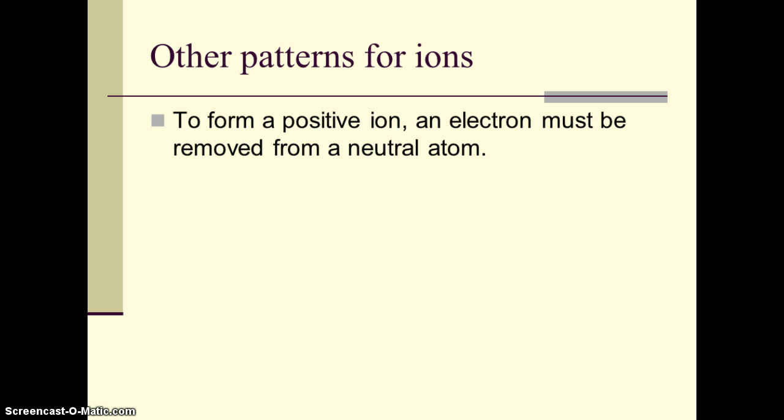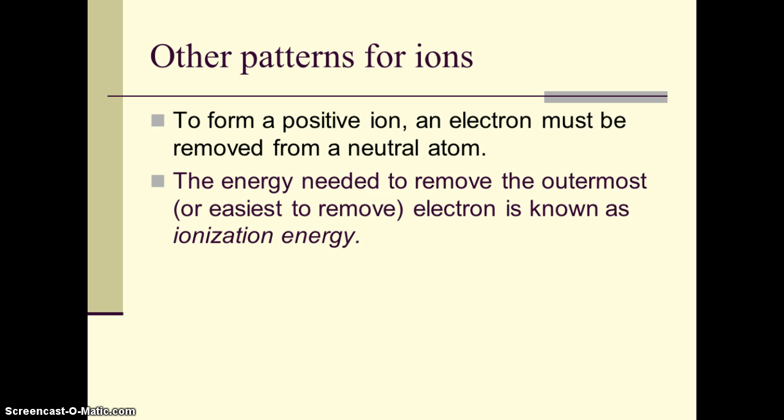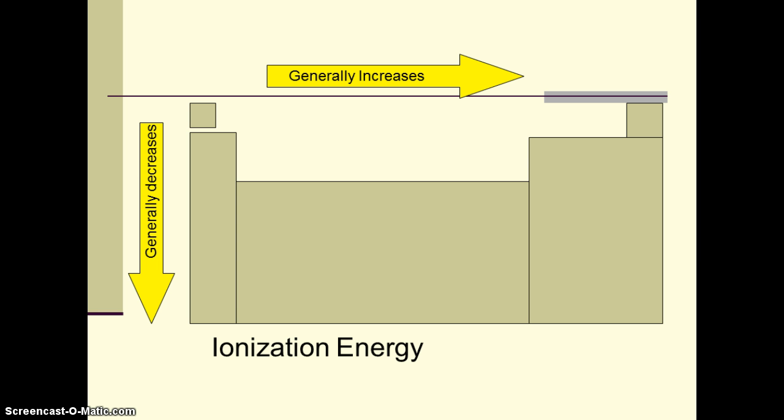There are some other patterns that we observe for ions as a result. One of those is ionization energy. And we looked at this when we were talking about electron energy levels and sub-levels. Ionization energy is the energy needed to remove the outermost or easiest to remove electron from an atom. And then once we remove that, we could have a second ionization energy, and a third and a fourth and so on, as long as there are electrons to remove.